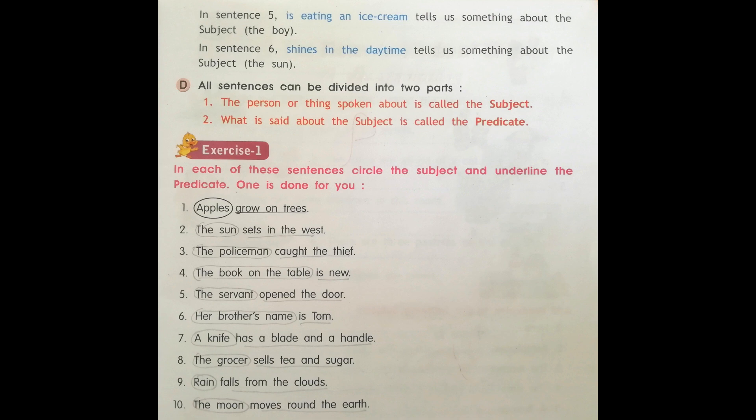All sentences can be divided into two parts. One: the person or thing spoken about is called the subject. Two: what is said about the subject is called the predicate.